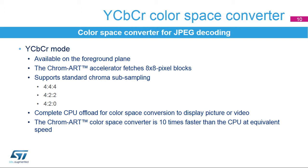The YCBCR mode enables a specific color space converter hardware to convert YCBCR data into RGB data. This block is available on the foreground plane and is used to copy or blend uncompressed data from the JPEG decoder into the frame buffer. It allows the user to directly convert YCBCR data arranged in 8x8 pixel blocks into a linear RGB format. All standard YCBCR chroma subsampling formats are supported from 4:4:4 down to 4:2:0. This new feature offloads the CPU from this costly operation and makes it 10 times faster.